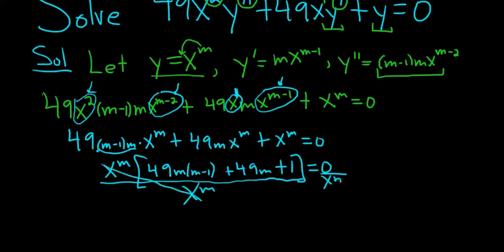So let's go ahead and distribute this. So 49m times m is 49m squared. Then here, 49m times negative 1 is negative 49m. Then we have plus 49m, and then plus 1, and all of this is equal to 0.